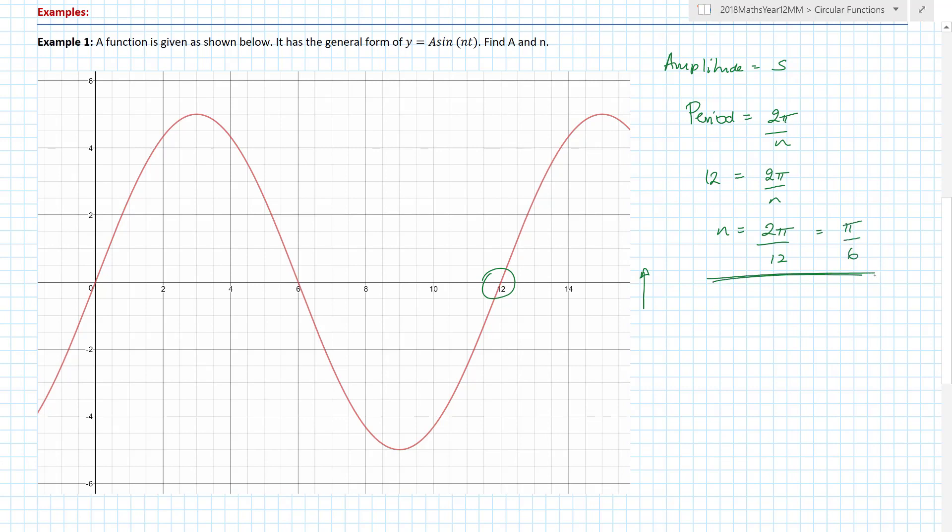And lo and behold ladies and gentlemen I have my two values you need to reform the equation to give you 5 sine of π on 6 times t. That would be your final answer. So the only thing that I really needed to know there was read off the maximum, the minimum, and the value of the period and just use the information I have. Easy peasy lemon squeezy.